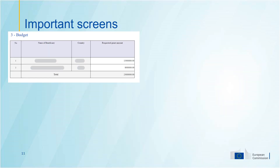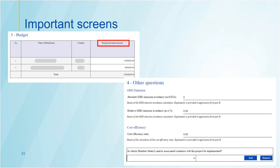Another important screen is the budget. How much grant do you request for your project? This is the only information you need to fill in in this table. Again, in the call text, you will find more information on how to calculate the requested grant amount. And last but not least, under Other Questions, you will encode the values for your absolute and relative GHG emission avoidance, cost efficiency, and the location of your project.